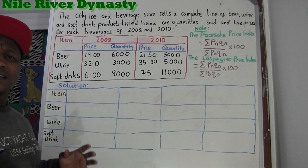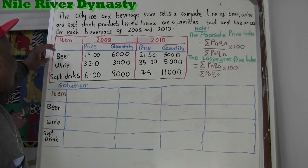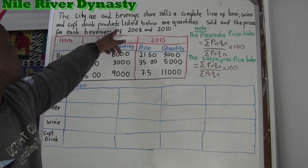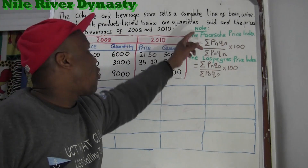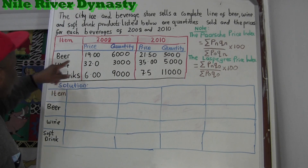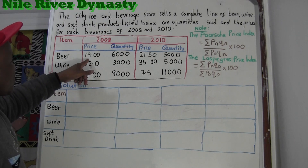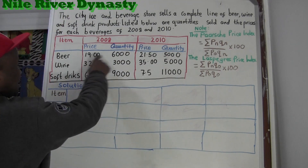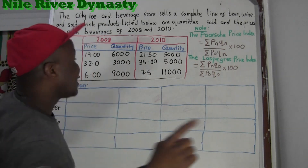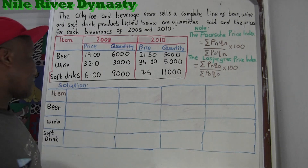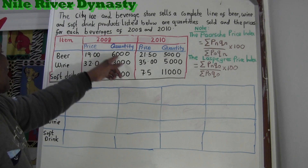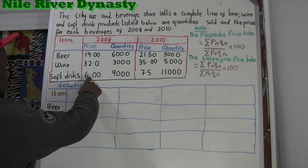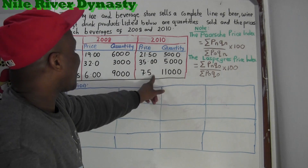So they have an ice and beverage store — a store where they sell ice and beverages like beer, wine, and soft drinks. They sell a competing line of beer, wine, and soft drink products. For beer, one unit probably costs 19 rand, and they bought 60,000 in 2008. By 2010 the price changed to 21.5 for one beer. Same for wine: in 2008 it cost 22 rand with 30,000 units. Soft drinks are cheaper, so more were bought, but by 2010 the price increased.